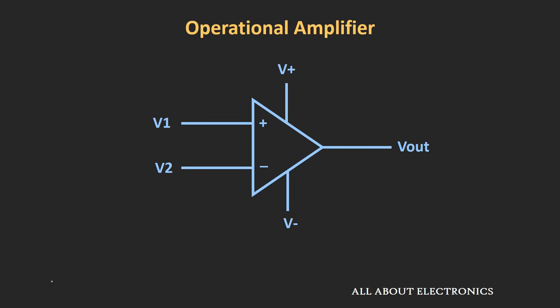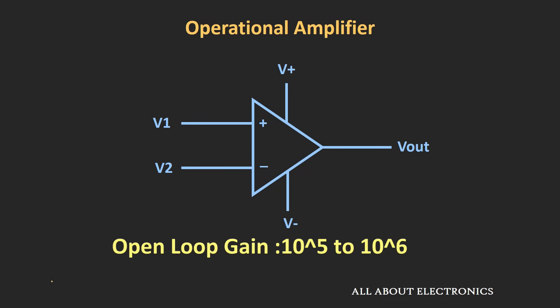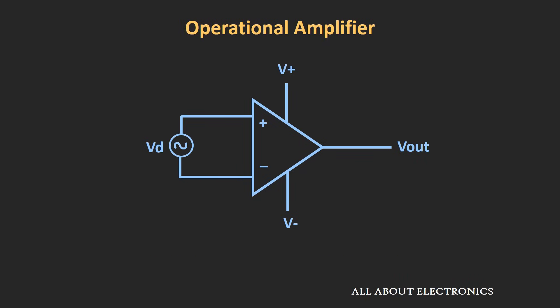Now in the last video, we had seen the basics of this operational amplifier and we had seen that this op-amp is a very high gain differential amplifier. The gain of the op-amp is in the range of 10 to the power 5 to 10 to the power 6. And we had seen that even if we apply a very small differential input voltage between the input terminals of this op-amp, the output will get saturated towards the bias points.